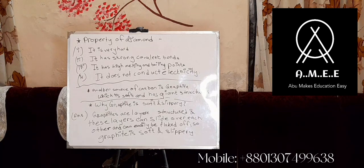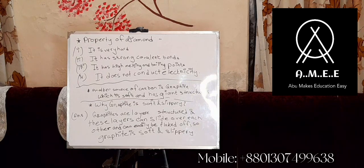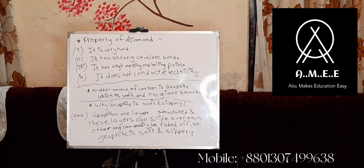Diamond has strong covalent bonds. It has high melting and boiling points. It does not conduct electricity. Another source of carbon is graphite, which is soft and has a giant structure.